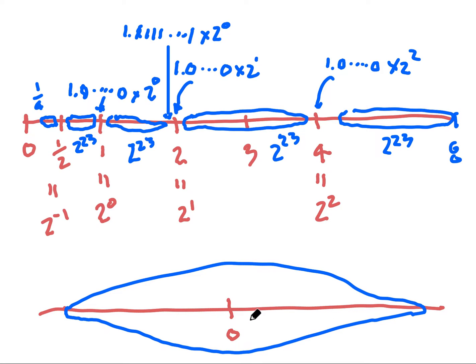Most of the numbers cluster around zero and as you move away from zero they will eventually peter out, there won't be any more. And out here we represent when we drop off the edge by minus infinity and positive infinity on this side. Okay, so that's a picture of the distribution of floating point numbers along the real line.